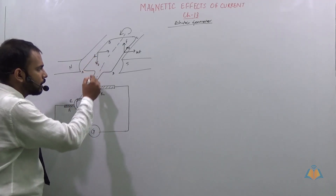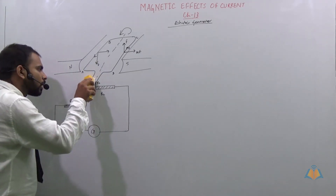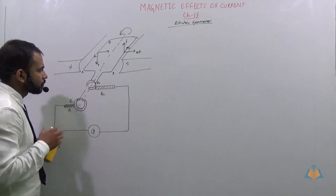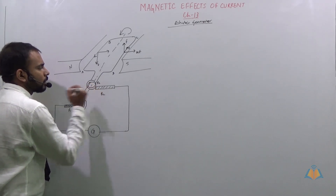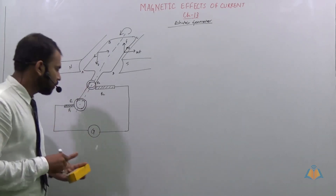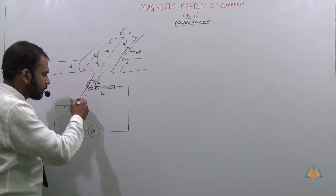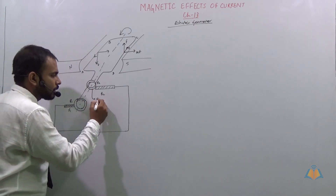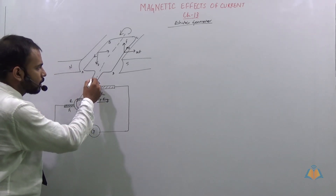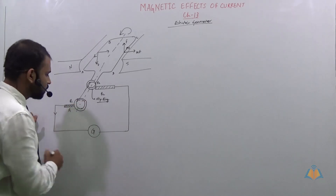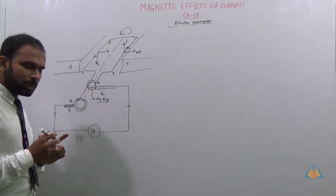The current moves from A through the slip ring. It moves from B to A, comes out to slip ring R1. The carbon brushes are in contact with the slip rings. This is the first situation — the current is moving in this direction from B1 to B2.